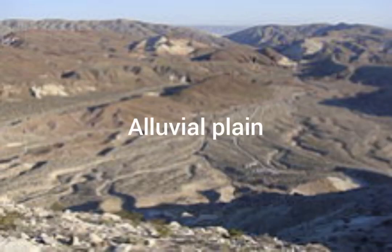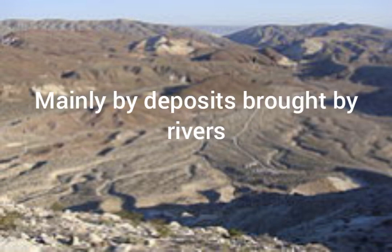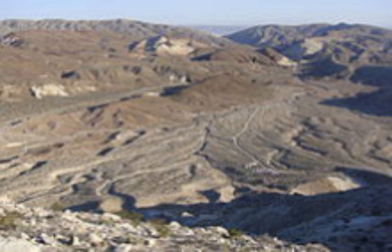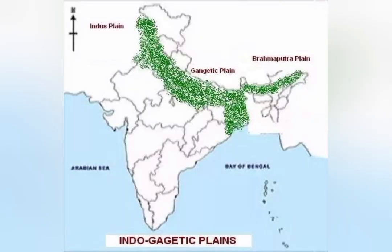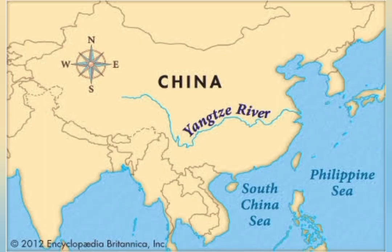The first type of Plain is an Alluvial Plain, which is mainly built because of the deposition of materials brought down by rivers. As the river valley floods, a lot of material is deposited, so these plains are also called Flood Plains. Deltas, which are the mouths of rivers, are where rivers deposit the maximum amount of silt and material, forming Alluvial Plains. Examples include the Ganga or Indo-Gangetic Plains of India and the plains of the Yangtze River in China, which deposits yellow silt.